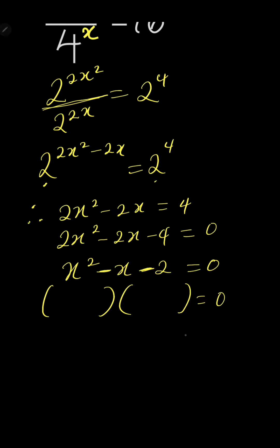The numbers should be minus 2 and plus 1, because minus 2 plus 1 is minus 1, and minus 2 times 1 is minus 2. So you write x minus 2 and then x plus 1. Don't forget your x.